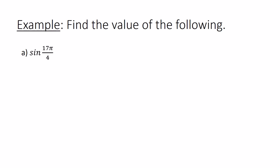We are now going to use these periodic properties to evaluate trig expressions. In our first example, I have sine of 17π over 4, which is 4-point-something π. So I need to get this down to an angle between 0 and 2π, because then I can locate the reference angle if needed and evaluate the trig expression. I'm going to take away 2π because that is how often the sine function repeats itself — every 2π radians.